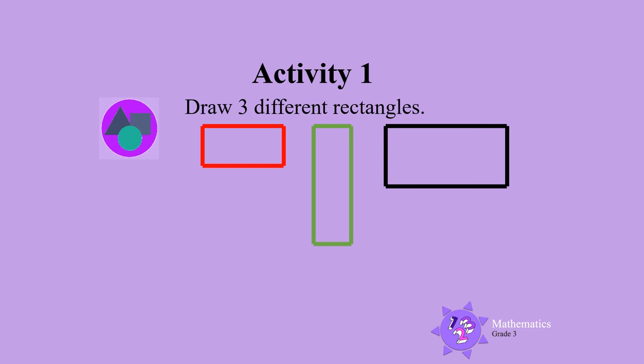Can you see that they are all flat shapes? And they have four straight sides. The rectangles also have four square corners.